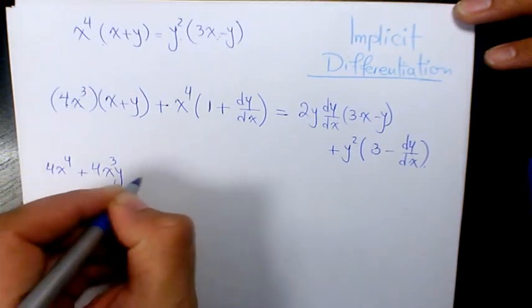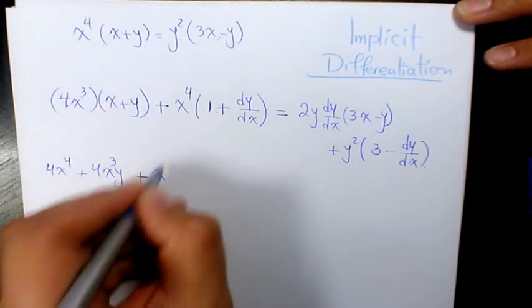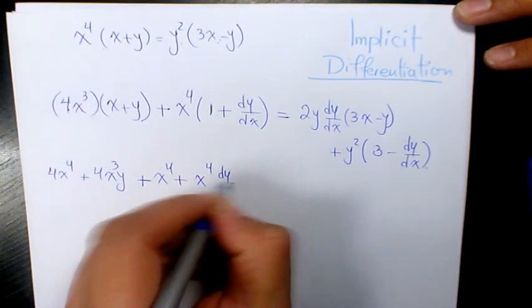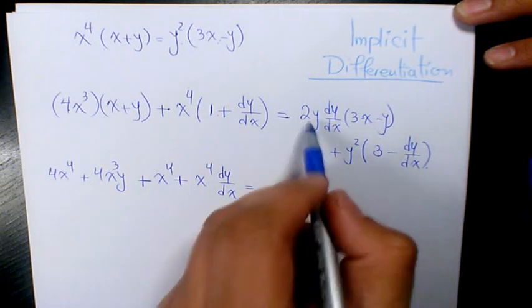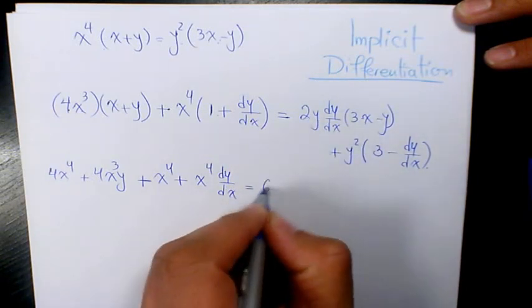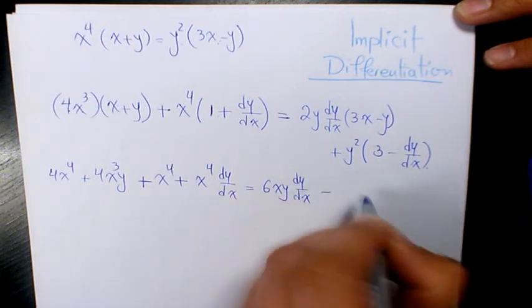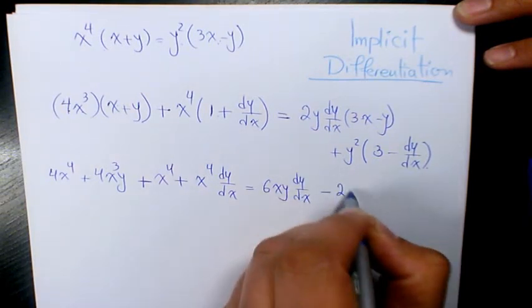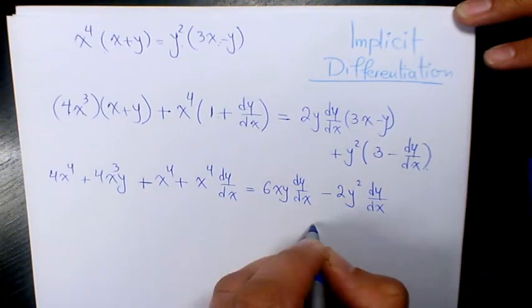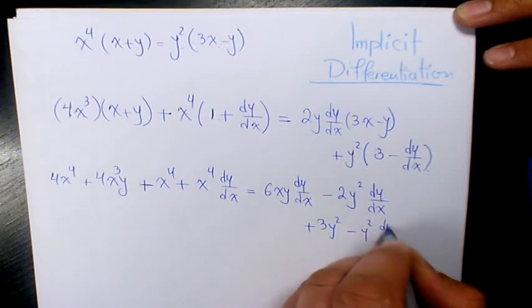Plus 4x cubed times y, plus x to the power of 4 times 1 is x to the power of 4, and then we have x to the power of 4 times dy over dx. Here we have 2y times 3x, which is 6xy dy over dx, minus 2y squared dy over dx, plus 3y squared minus y squared dy over dx.